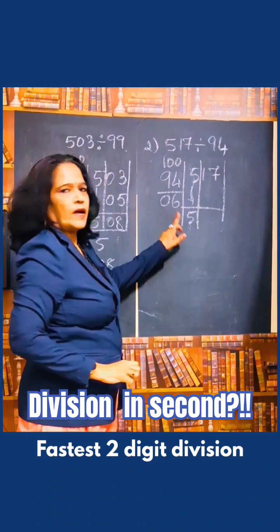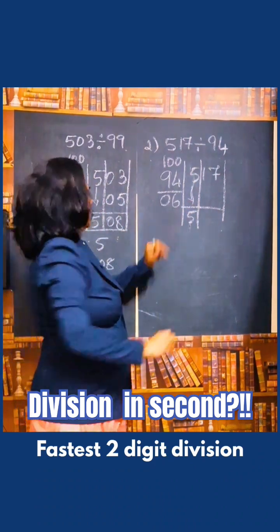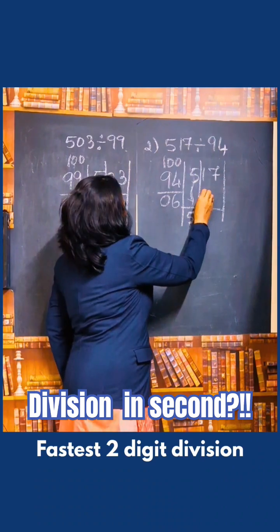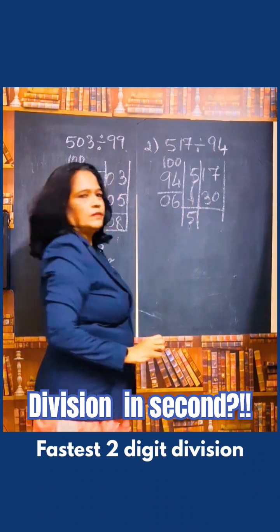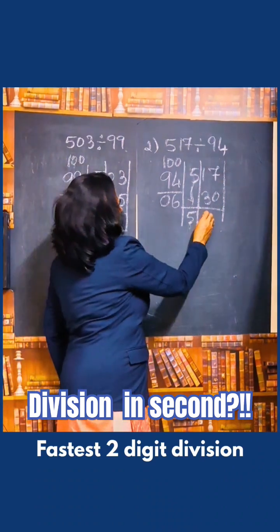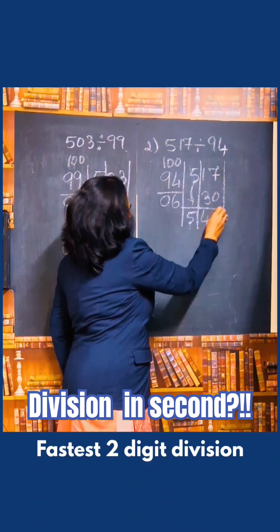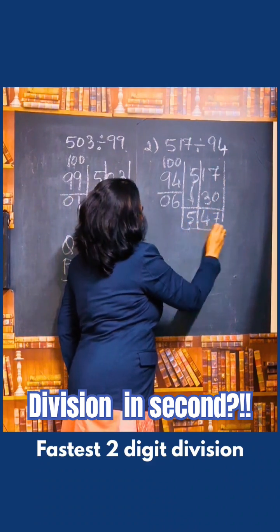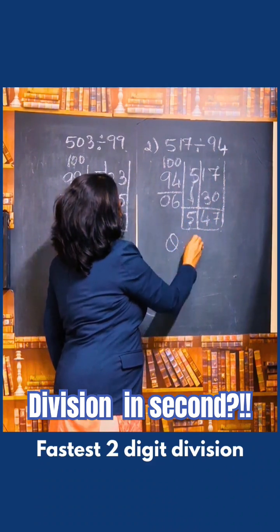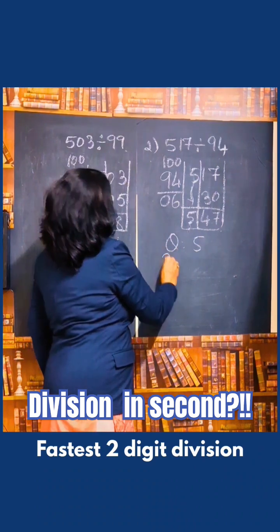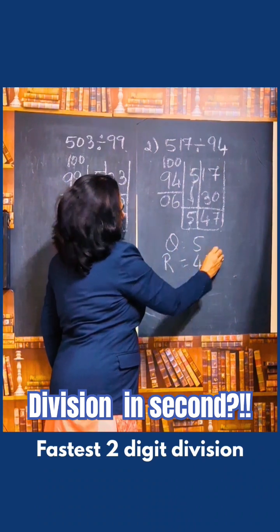Multiply 5 into 6, which is 30. Then the answer is 47. So the quotient is 5 and remainder is 47.